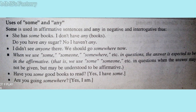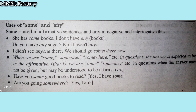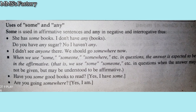When we use some, someone, somewhere, etc. in questions, the answer is expected to be in the affirmative. That is, we use some, someone, etc. in questions when the answer may not be given but may be understood to be affirmative. Have you some good books to read?